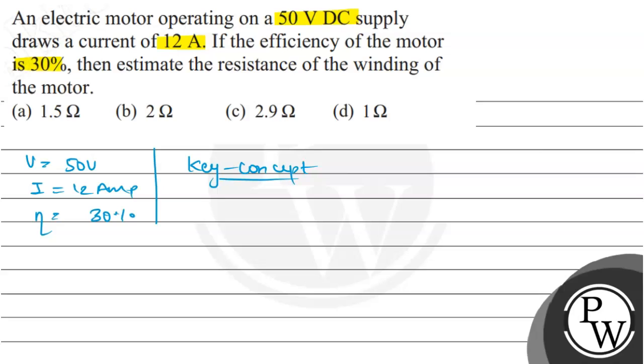Basically, you have 30 percent efficiency given, but the resistance will dissipate power. So what we can do is calculate the power which will be dissipated.